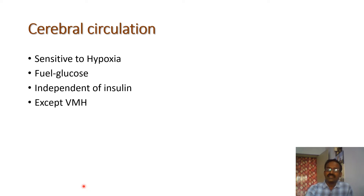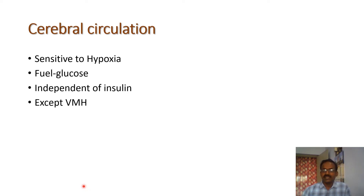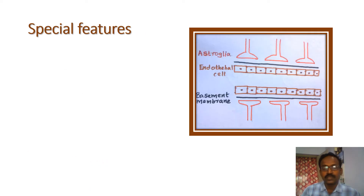In scarcity, when the blood glucose level is very much decreased, the brain can take up ketone bodies as an alternative fuel. The special features of cerebral circulation: cerebral arteries are end arteries.